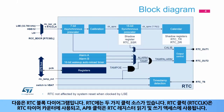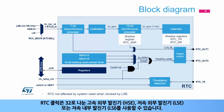Here is the RTC block diagram. The RTC has two clock sources. The RTC clock, or RTC-CLK, is used for the RTC timer counter, and the APB clock is used for RTC register read and write accesses. The RTC clock can use either the High-Speed External Oscillator, or HSE, divided by 32, the Low-Speed External Oscillator, or LSE, or the Low-Speed Internal Oscillator, or LSI.